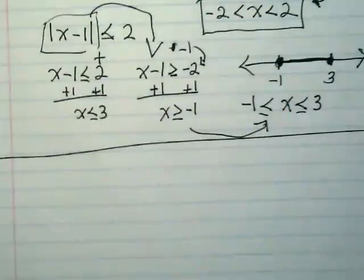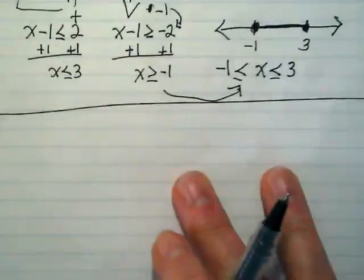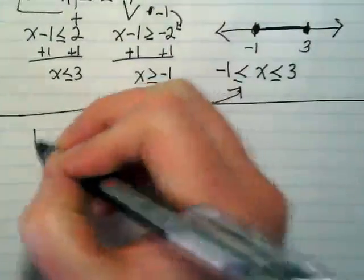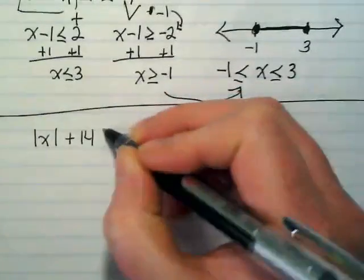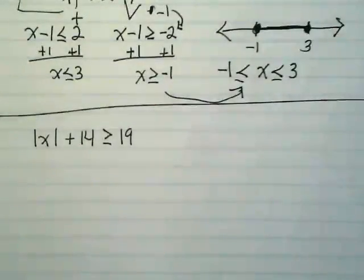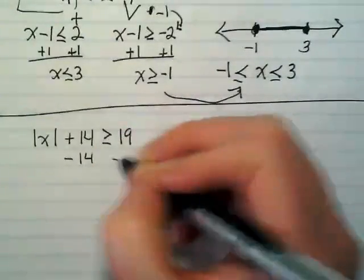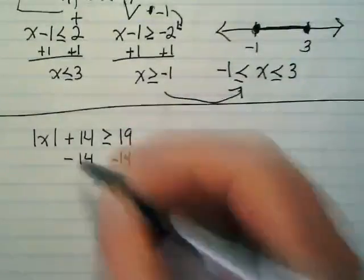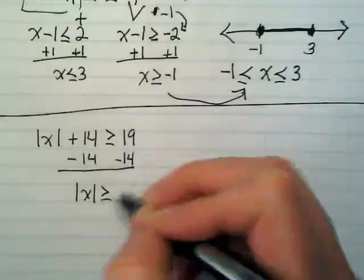All right, let's do a couple 'or's. Absolute value of x plus 14 is greater than or equal to 19. We're going to subtract the 14 from both sides. Absolute value of x is greater than or equal to 5.